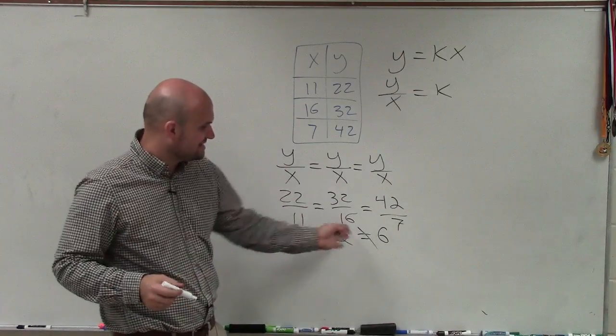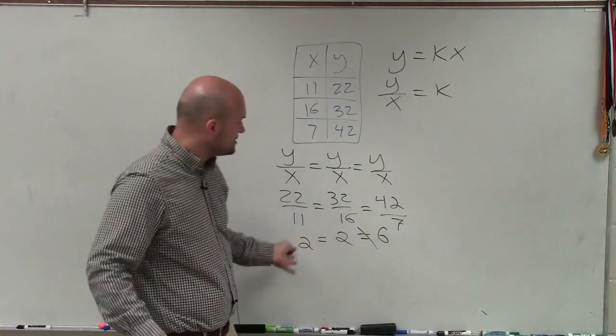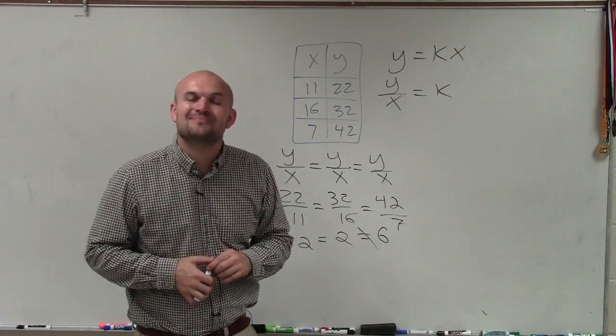Therefore, since the constant is not equal, the y over x does not equal the same value k for each of these. This is not an example of direct variation. Thanks.